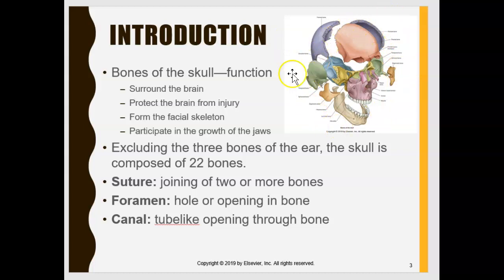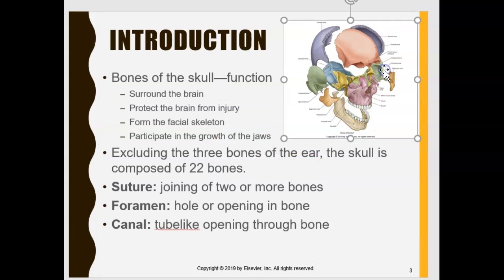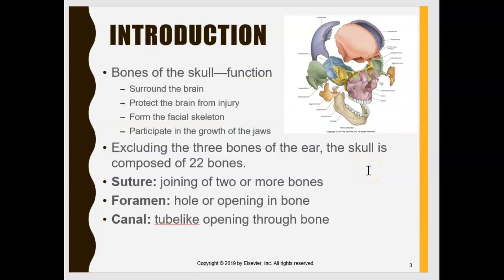When we look at the bones of the skull there are 22 bones in total. The reason why we have bones is because they surround the brain, protecting it from injury. They form our facial skeleton and as babies grow, the bones grow and participate in the growth of the jaws as well.